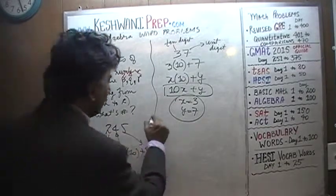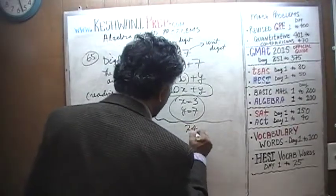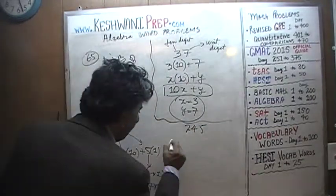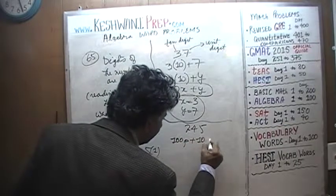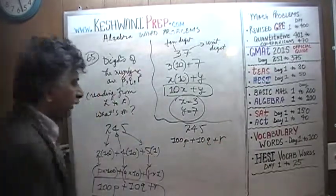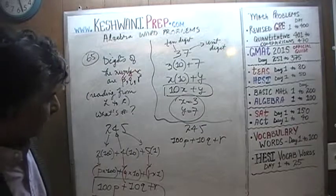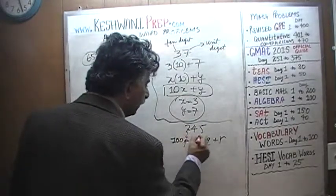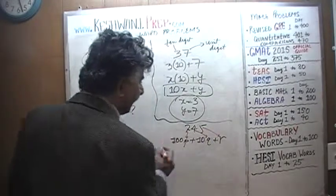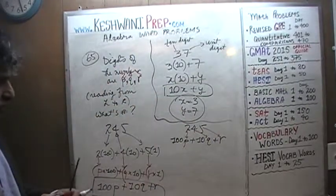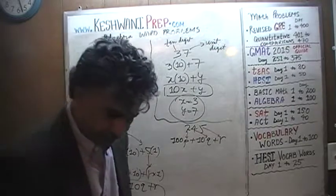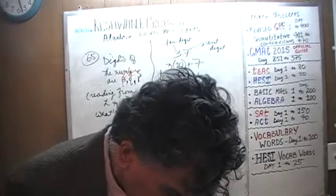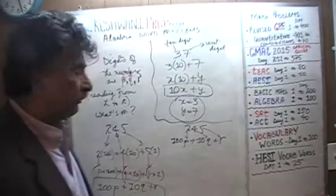One more time: 245 in the language of algebra is to be written as 100P plus 10Q plus R, where P happens to be 2, Q happens to be 4, and R happens to be 5. That gives 245.